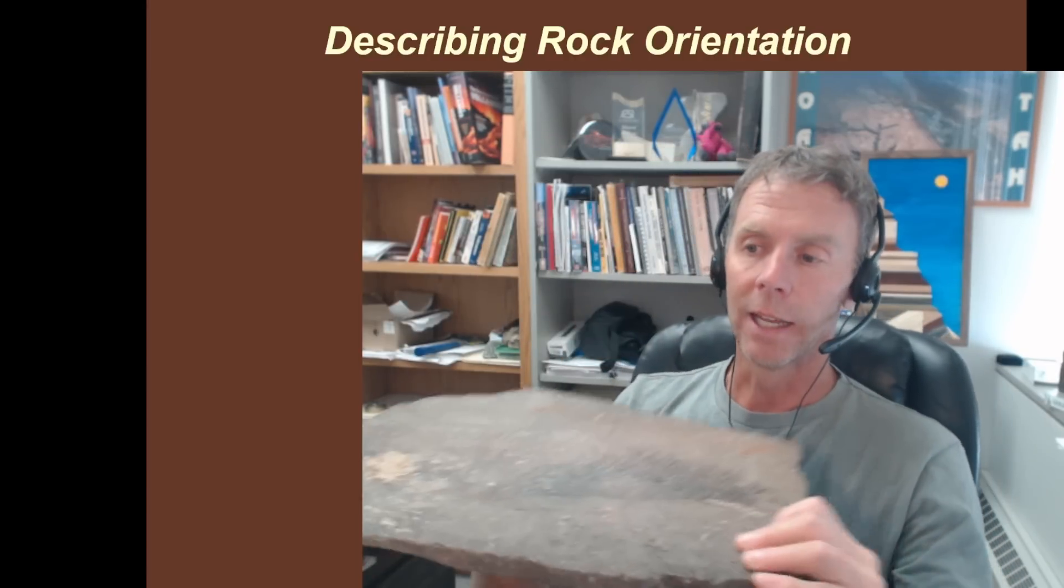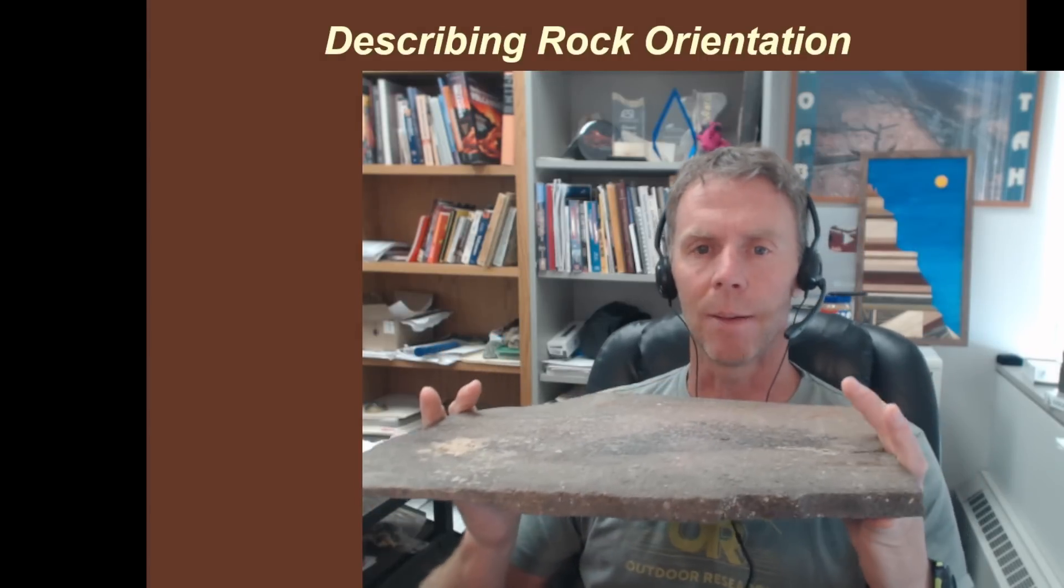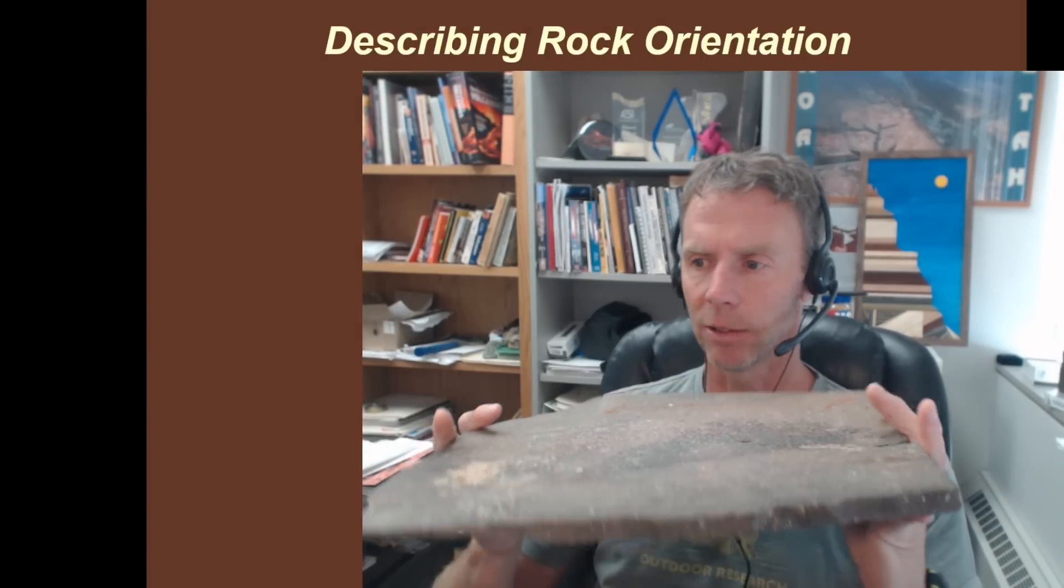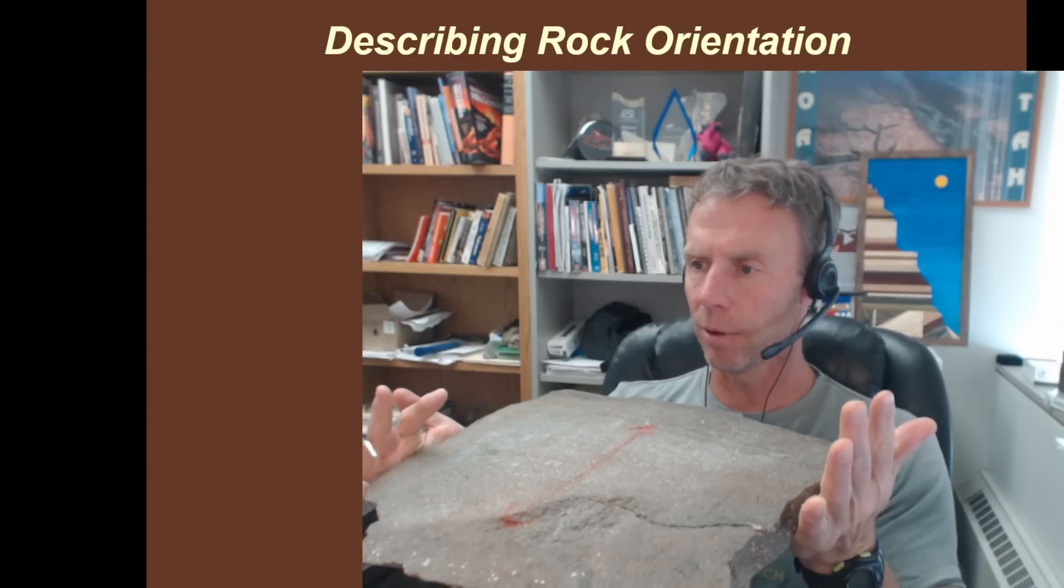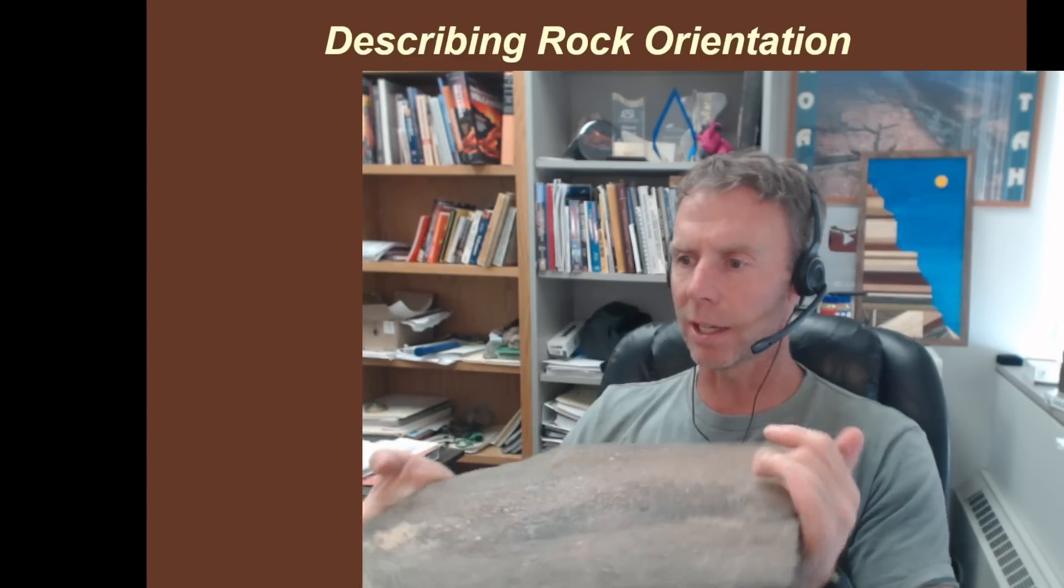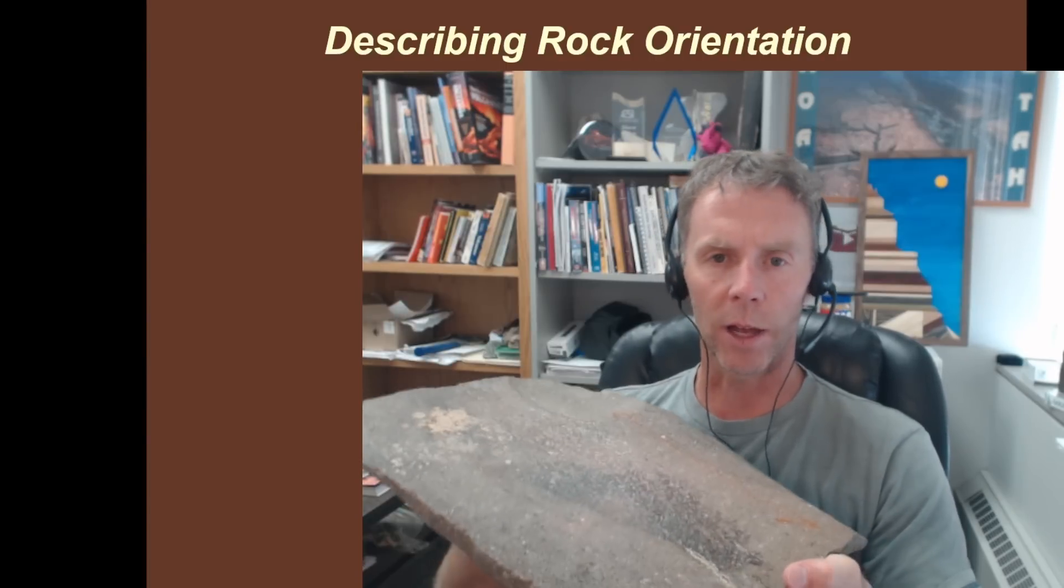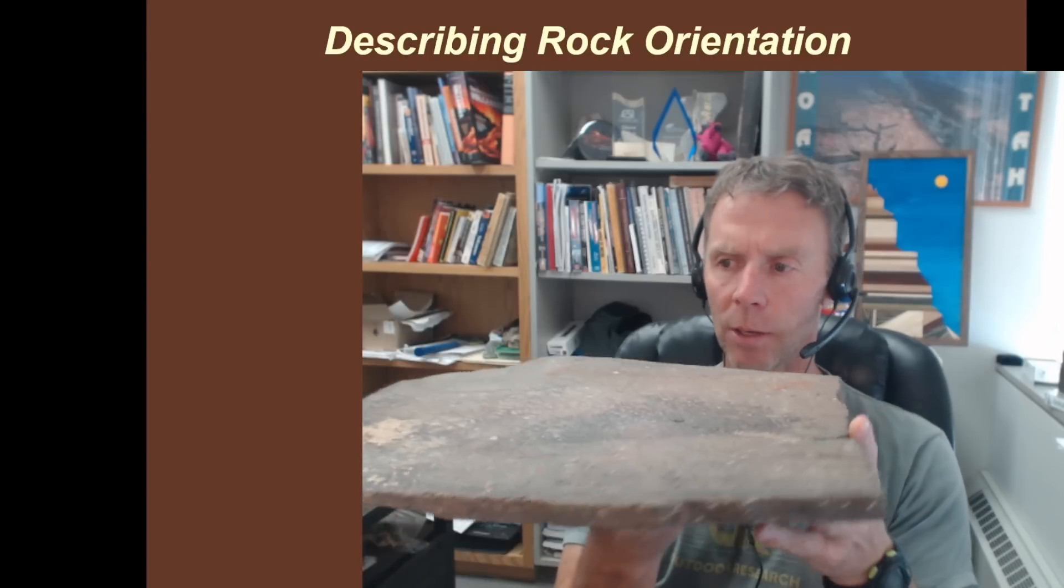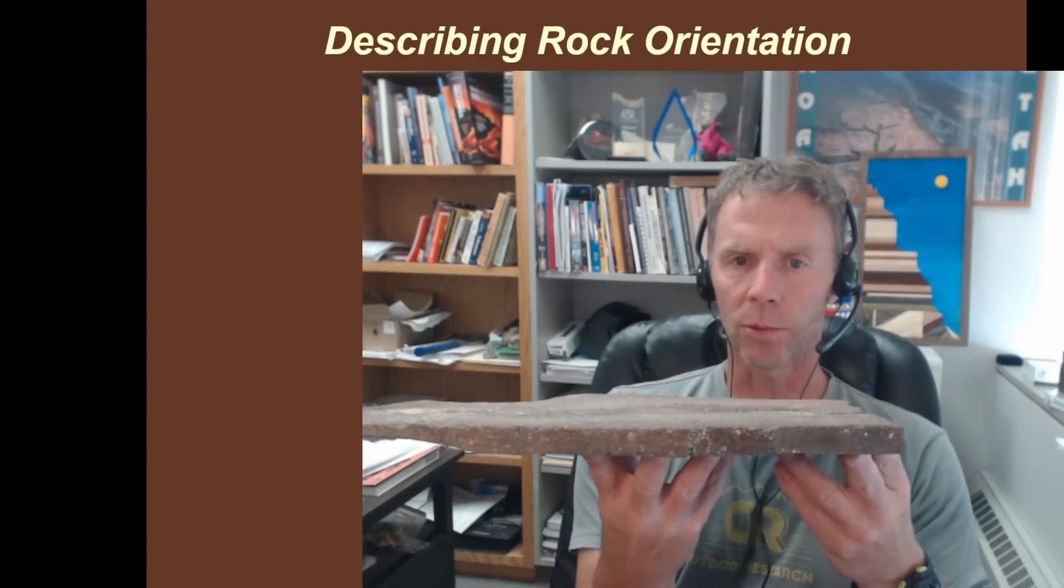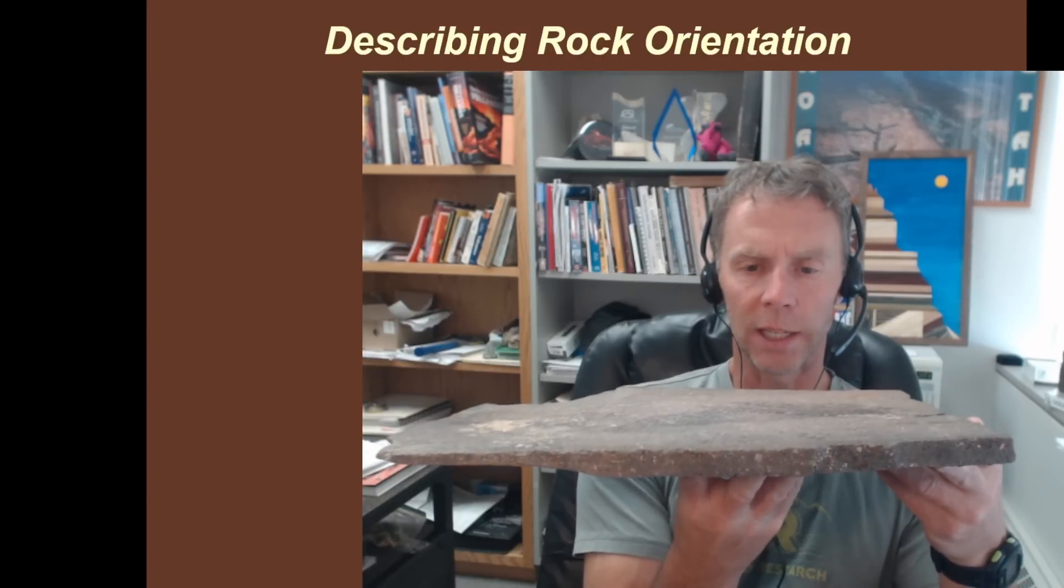Many of the rocks we look at tend to be planar objects. I'm going to start here with the big webcam. So I have here a slab of rock, a planar slab of rock. It doesn't matter what type of rock it is, but many of our sedimentary and foliated metamorphic rocks present themselves in this way.